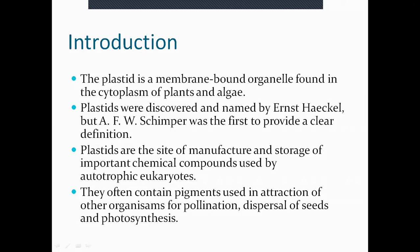Plastids are found in plants — primitive plant cells as well as eukaryotic plants. Along with that, some very similar types of organelles are also found in fungi. They often contain pigments that are used for attraction of other organisms.